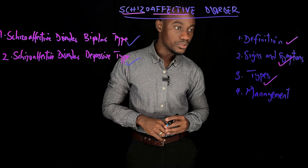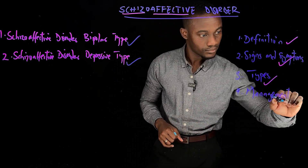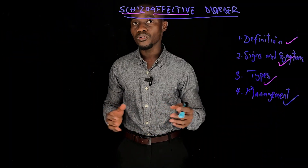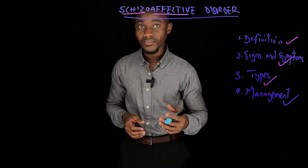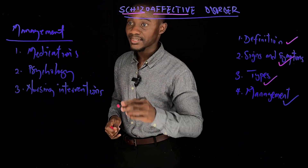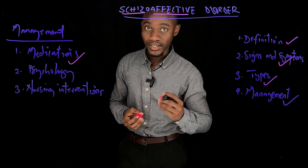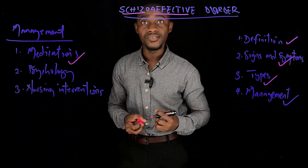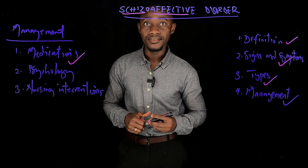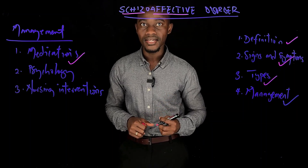We are ending this video by talking about the management of individuals with schizoaffective disorder. We will cover the use of medication, psychological management, and nursing management. Starting with medications: the medications used combine those for schizophrenia and mood disorders. Therefore, the kinds of medications used are antipsychotics, antidepressants, and mood stabilizers.